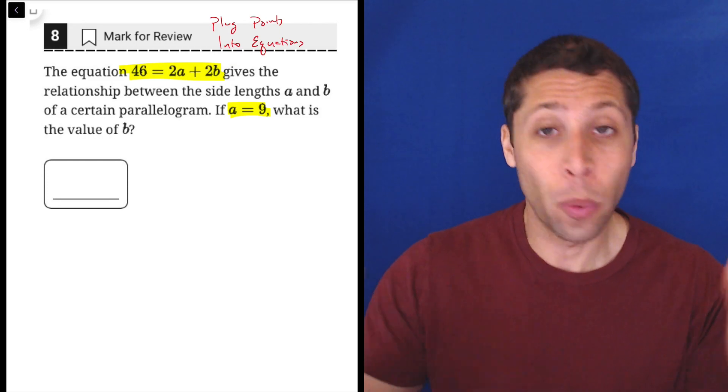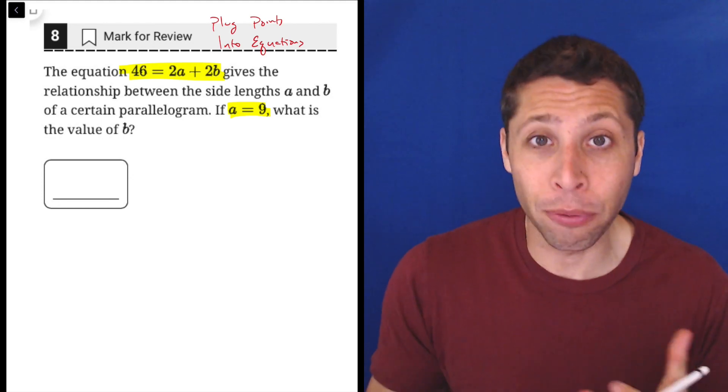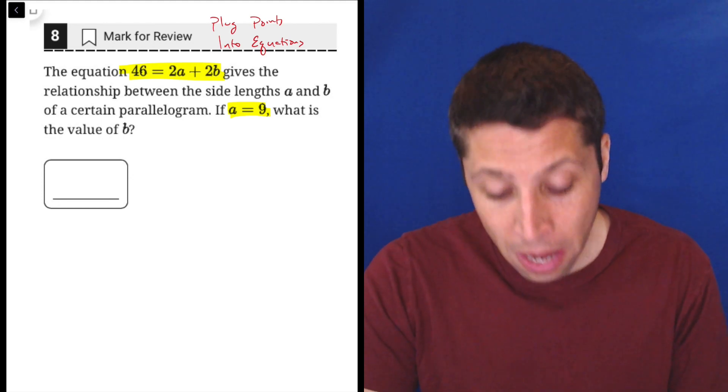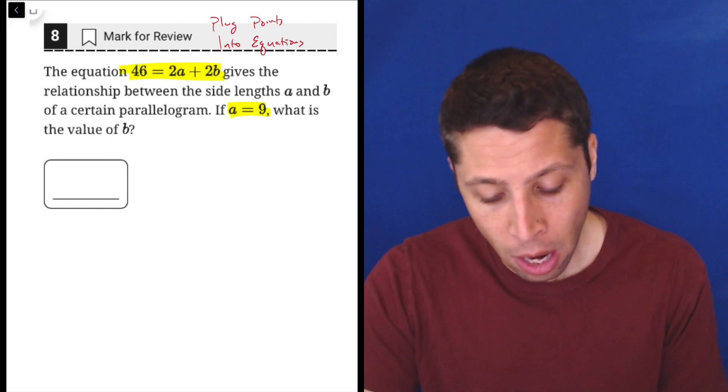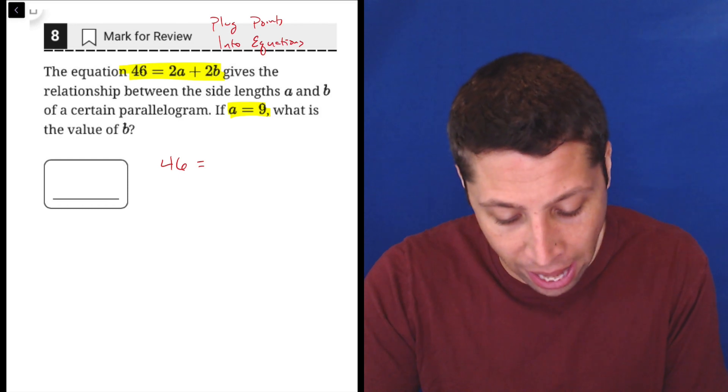So that's okay. The point is we have an equation, we have some variables, and we have some numbers that we can plug in for some of the variables. Basically let your robot brain take over at this point. We would just take our 46 equals 2A plus 2B, and we have A is 9.